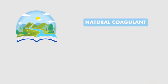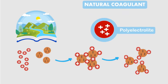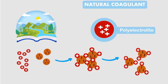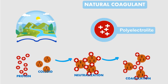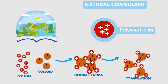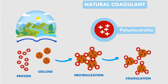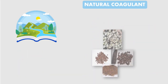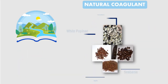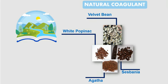Natural coagulants can be used because they contain a polyelectrolyte compound in the form of protein, which functions the same as chemical coagulants. The materials that can be used as natural coagulants include white popinac, sesbania seeds, velvet bean, and seminia seeds, using a dual coagulation system method with a semi-continuous process.